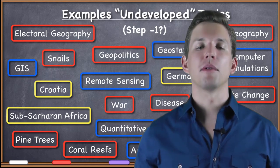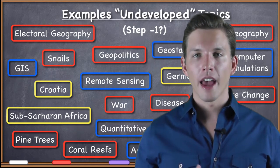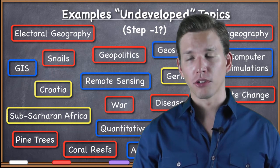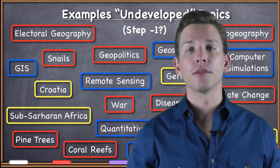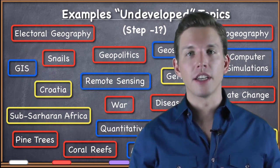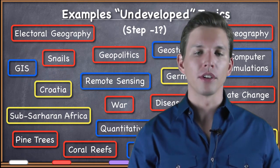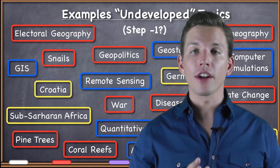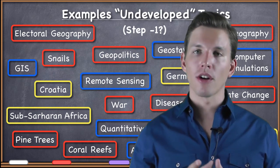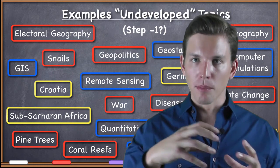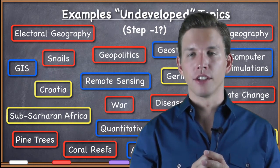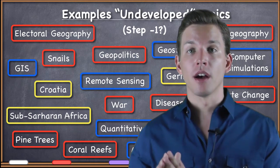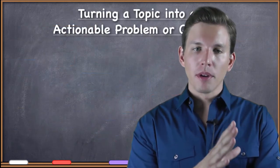They'll be very interested in studying a particular location, or a particular theme like war, geopolitics, or economic geography, or they may be very interested in developing proficiency in some kind of methodology — whether it's geostatistics, GIS, or remote sensing. So if you just have one of those components of the geographic triad, you have an undeveloped topic. That's where everyone starts. Then you take that undeveloped topic and start to marry it with the other two elements of the triad you're also interested in, and then you have a developed topic.